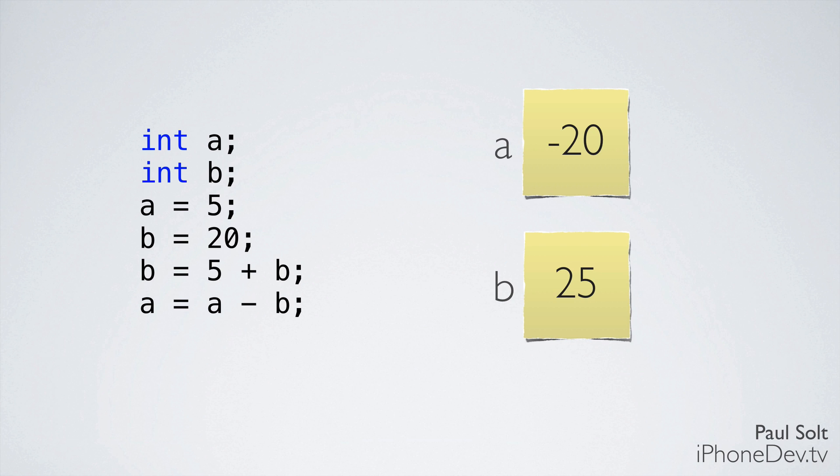So again, this is a simple example, but this is all you're really doing when you're writing code. You're modifying values, storing the results, and then using them again.